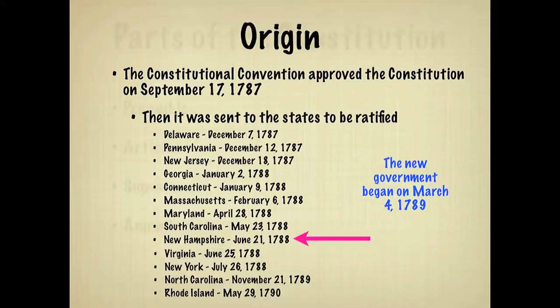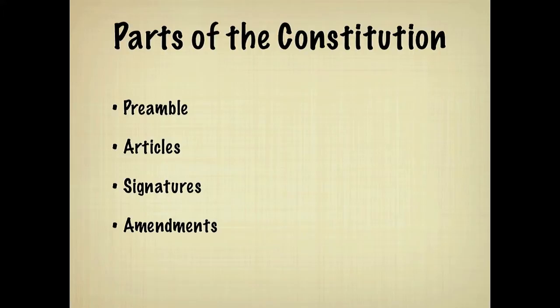The Constitution consists of a preamble, 7 articles, 40 signatures, and 27 amendments. Let's examine each individually.